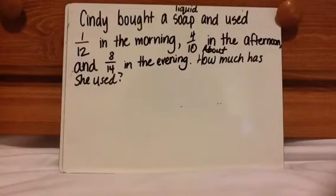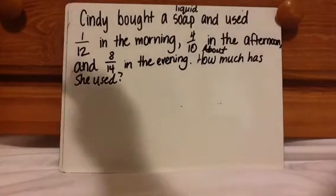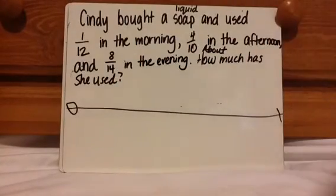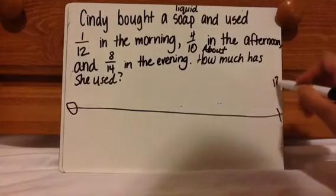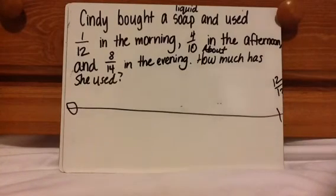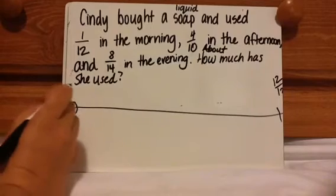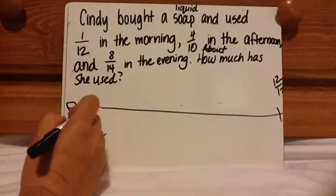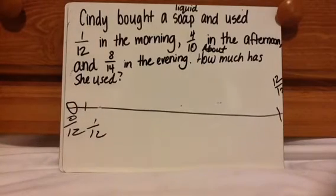Cindy bought liquid soap and used 1 twelfth in the morning, 4 tenths in the afternoon, and 8 fourteenths in the evening. About how much has she used? Draw a number line — 0 on the left, 1 whole on the right. For 1 twelfth: I know 0 twelfths is on the left and 12 twelfths is on the right. So 1 twelfth would be right around here — close to basically 0. It's like she barely used anything.